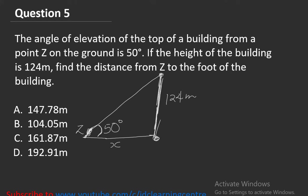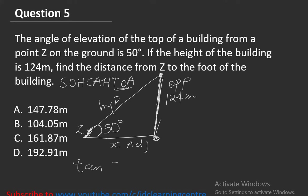We use trigonometry ratios. Remember SOH CAH TOA. The longer side of the triangle is the hypotenuse. The side facing the angle is the opposite, and the other side is the adjacent. We use TOA because we have the opposite and adjacent. So tan 50 degrees equals opposite (124) divided by x, where x is the distance from Z to the foot of the building.